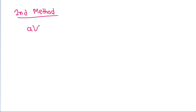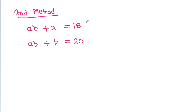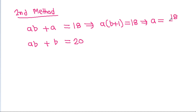In the second method, we have ab + a = 18 and ab + b = 20. From the first equation, factoring out a: a times (b + 1) = 18, so a = 18 divided by (b + 1).